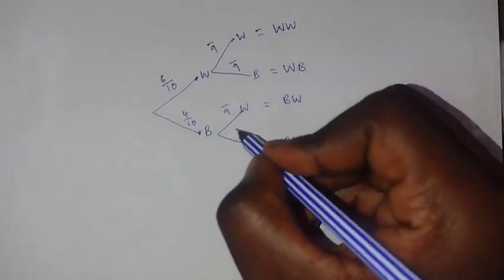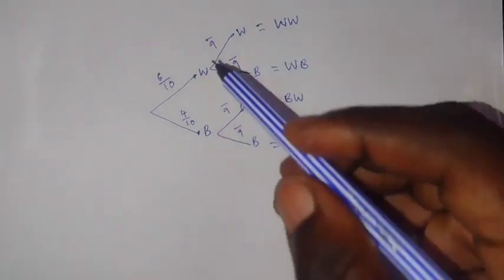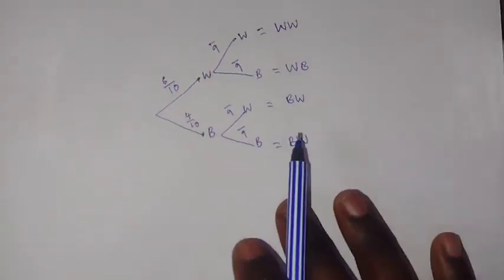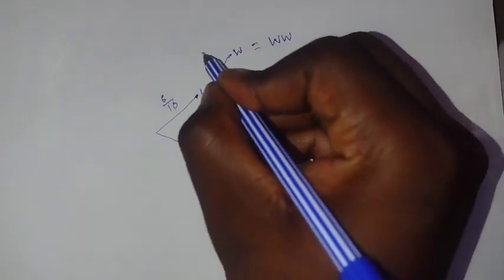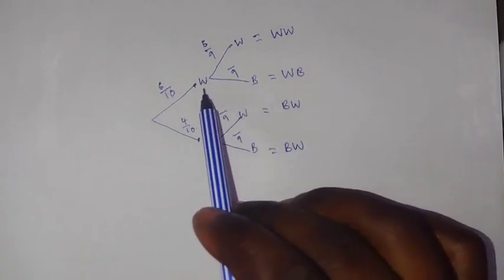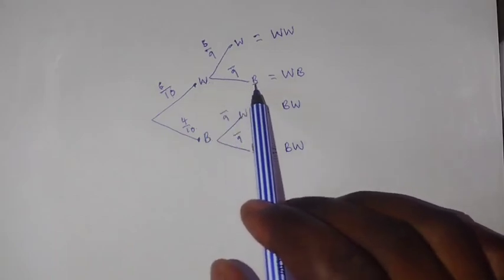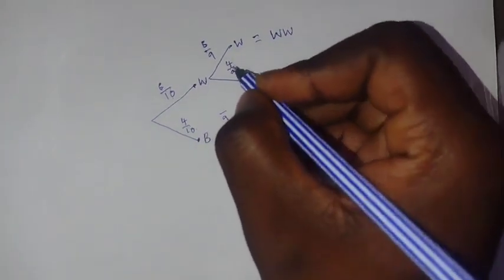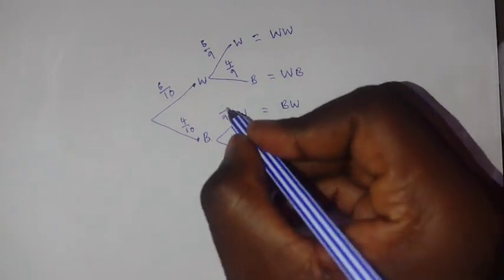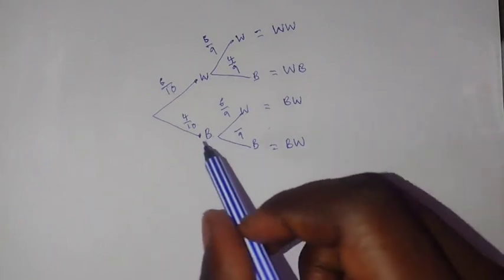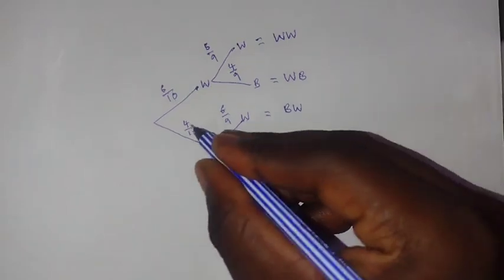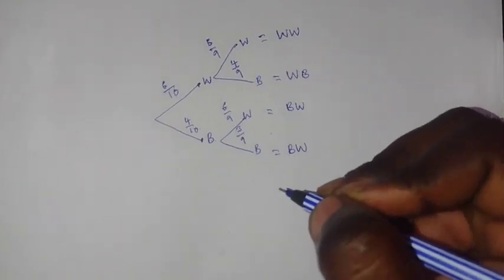Now let's determine the numerators for the second selection. For white-white: we already picked white, so white remaining is 5, giving 5 over 9. For white-black: we picked white, so black stays at 4, giving 4 over 9. For black-white: we picked black, so white stays at 6, giving 6 over 9. For black-black: we picked black, so black remaining is 3, giving 3 over 9.